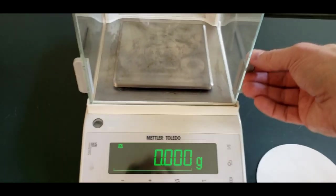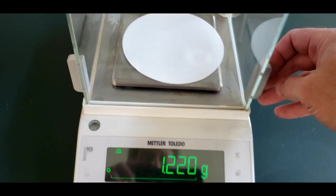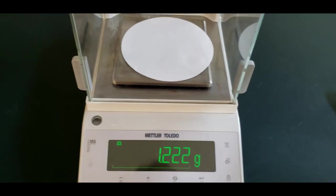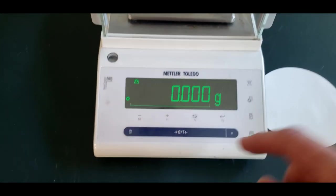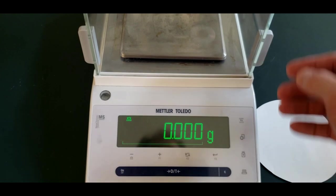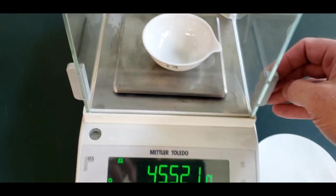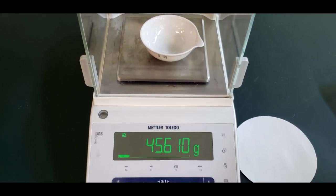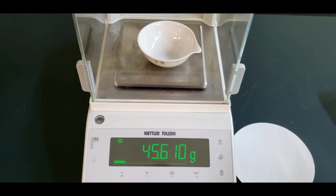Next we're to weigh a piece of filter paper. 1.222 grams. And then we need to weigh an evaporating dish. It's 45.610 grams. So those are two masses we have to add into our report sheet.